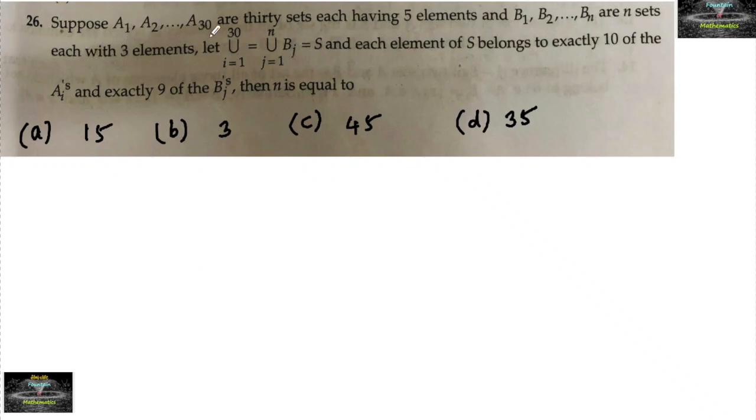Suppose a1, a2, and so on a30 are 30 sets each having 5 elements, and b1, b2, and so on bn are n sets each with 3 elements. Let union over i equals 1 to 30 of ai equal union over j equals 1 to n of bj equal S. Each element of S belongs to exactly 10 of the ai's and exactly 9 of the bj's. Then n is equal to?